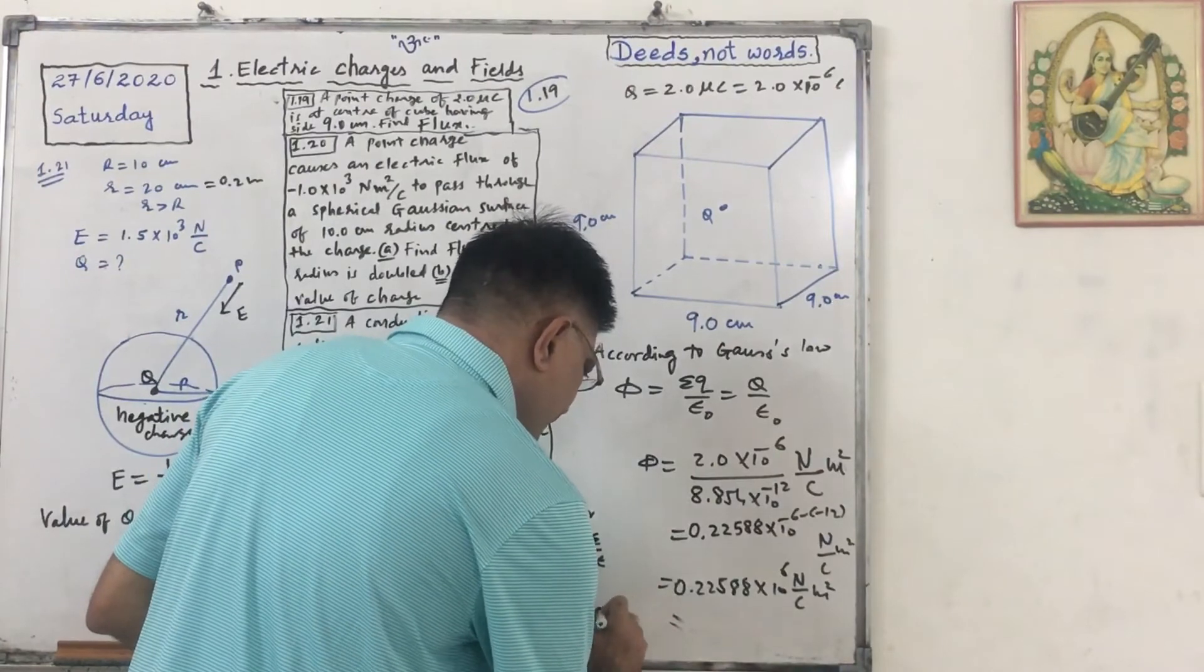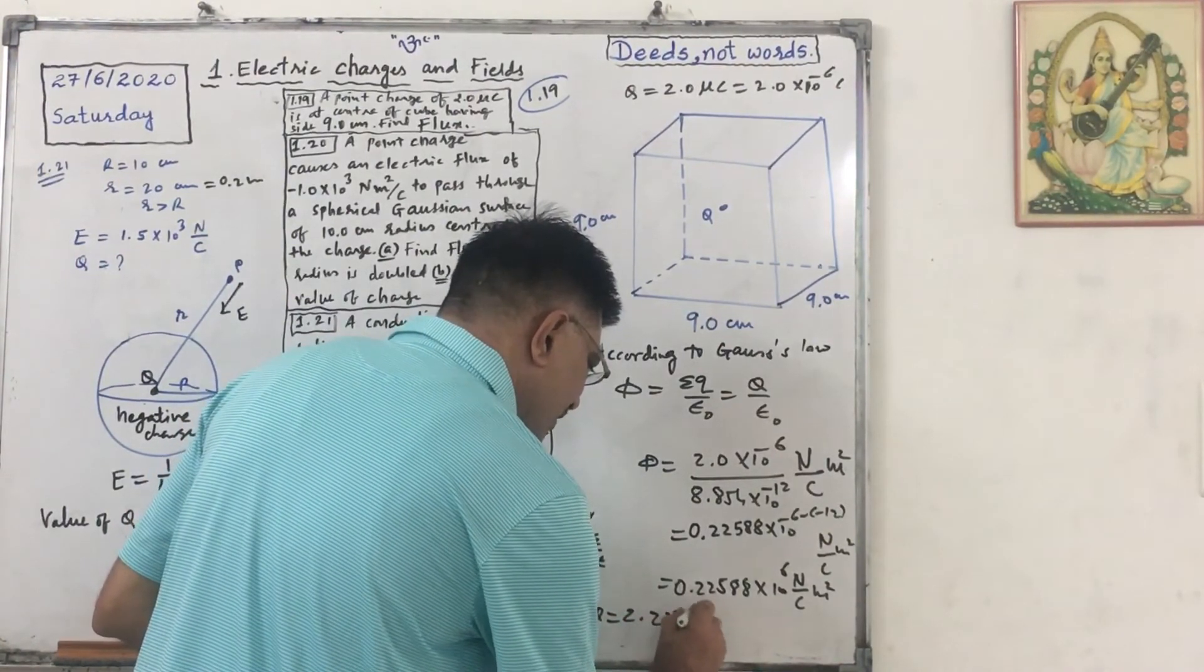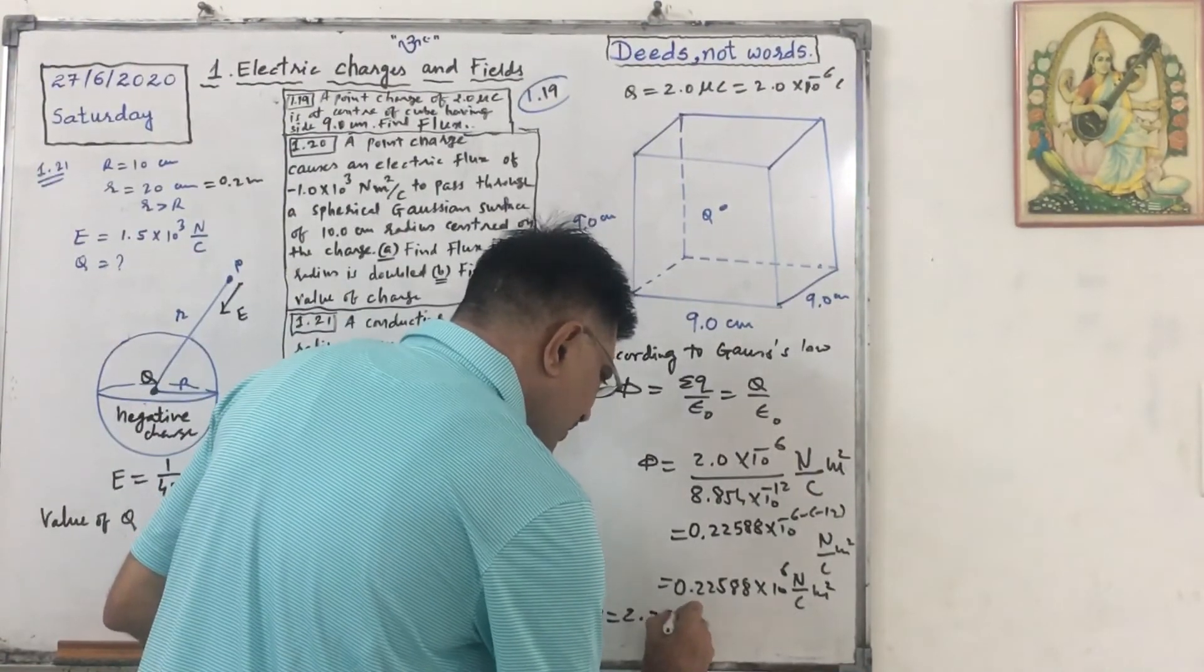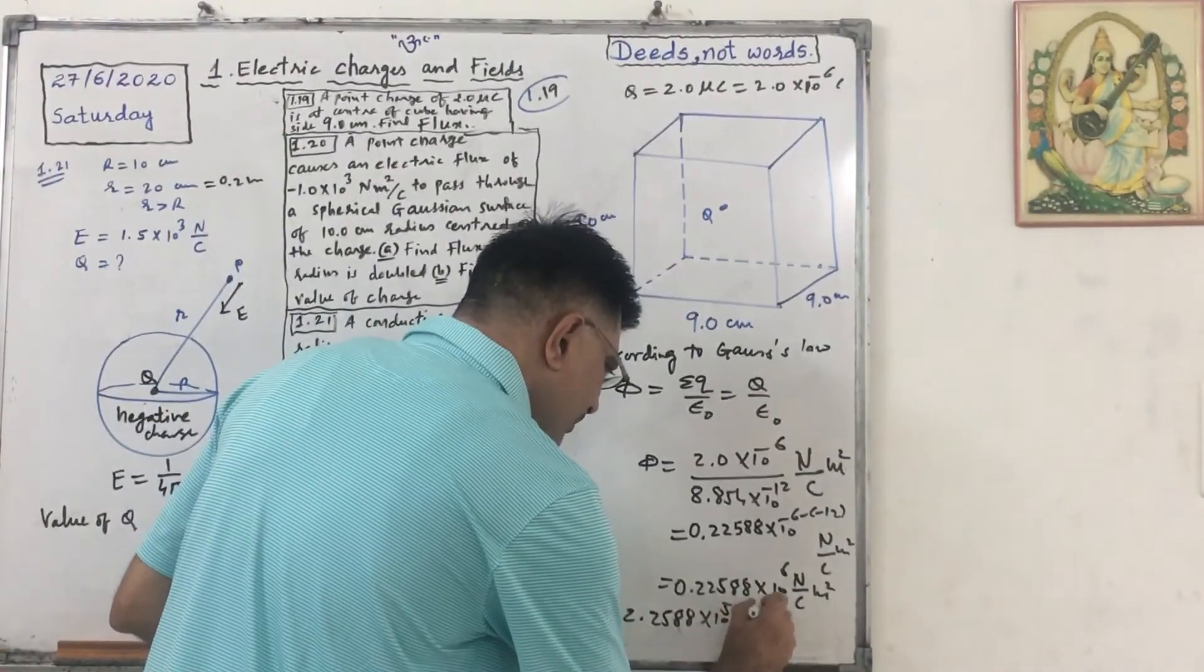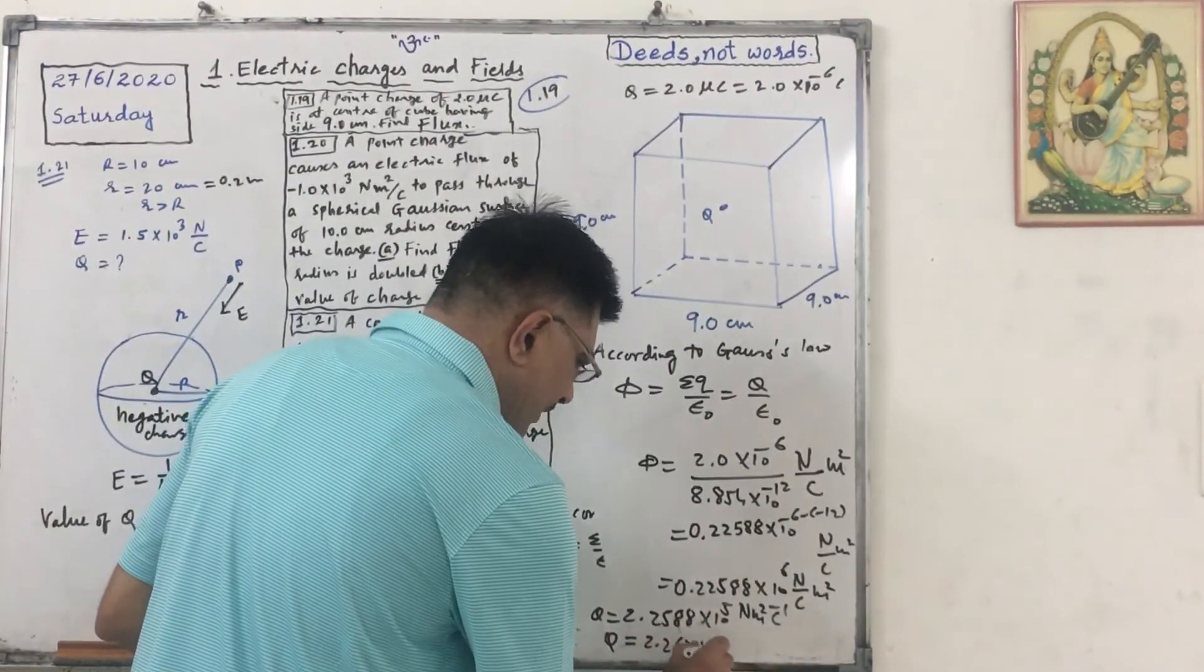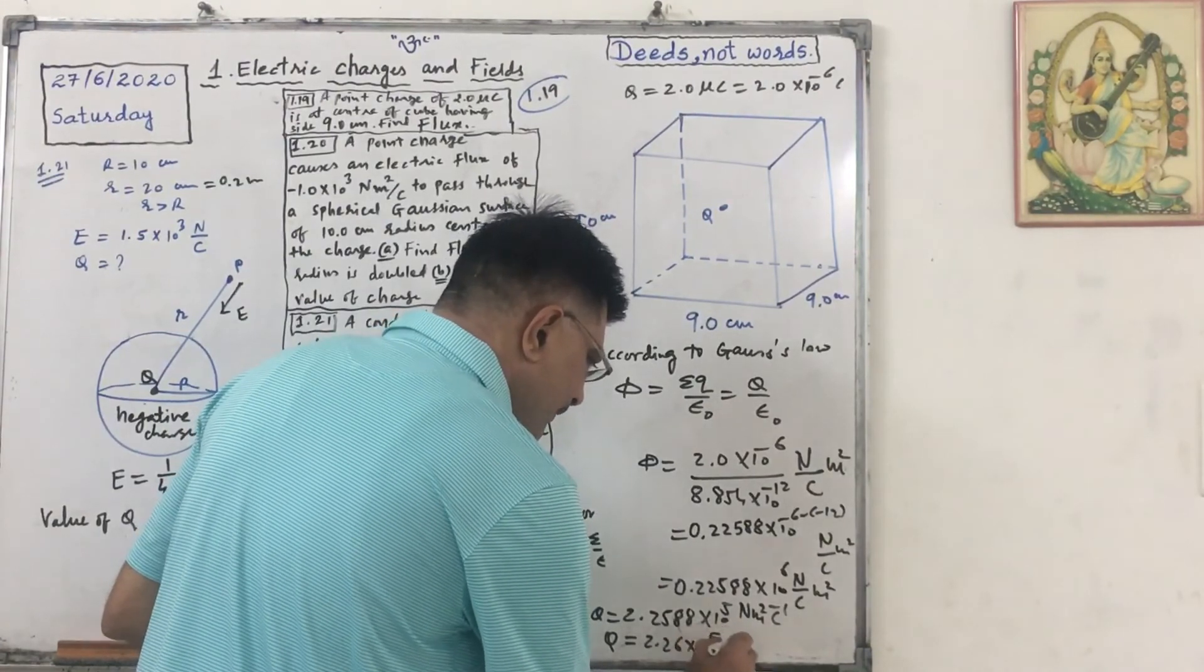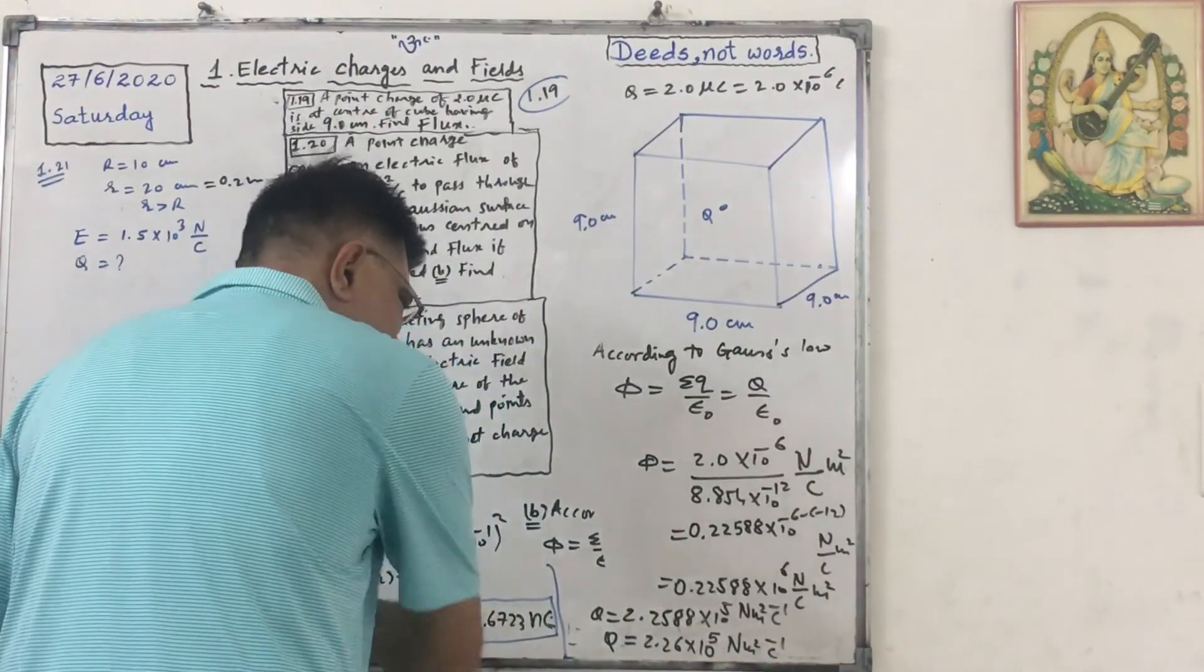When we are writing in scientific notation, it will become 2.2588 into 10 raised to 5 Newton meter square per coulomb. That is the answer.